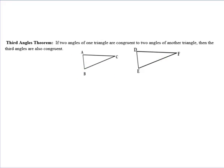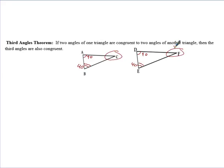There's something called the Third Angles Theorem, which states that if two angles of one triangle are congruent to two angles of another triangle, then the third angle must also be congruent. In other words, if two angles are already known — say 90 degrees and 40 degrees — then by default, because they all add up to 180 degrees, the third angles in both triangles have to be the same.